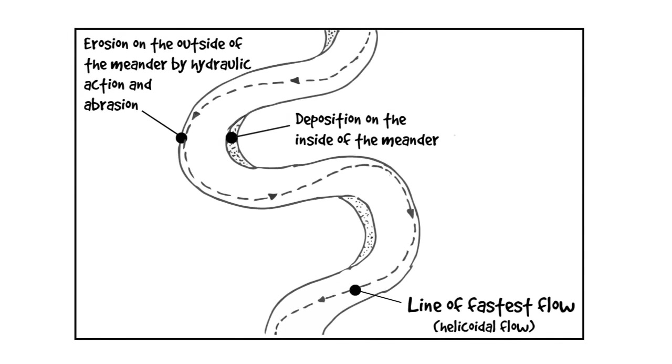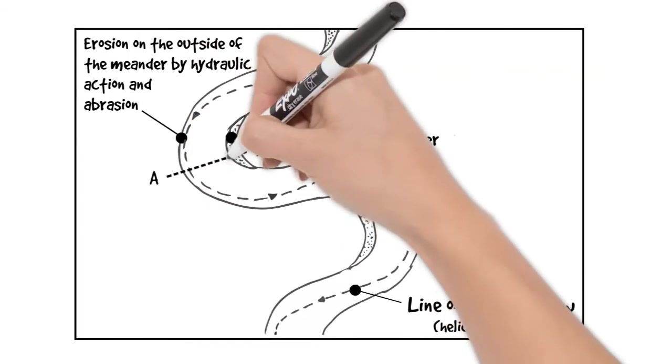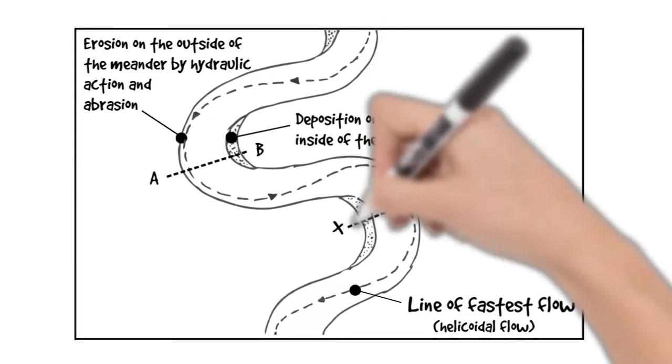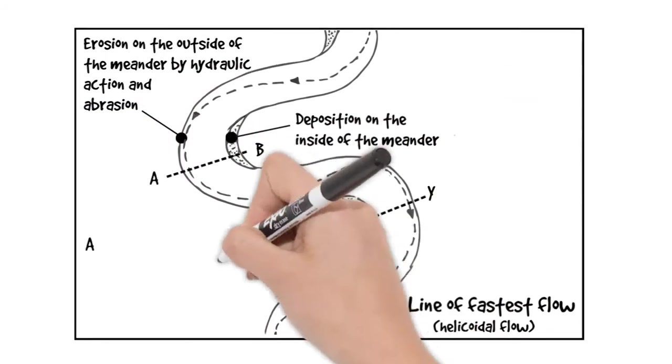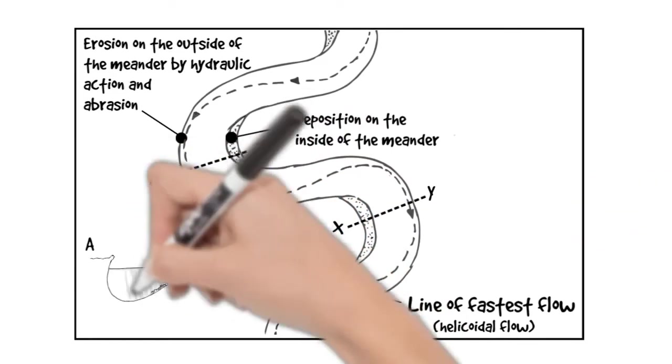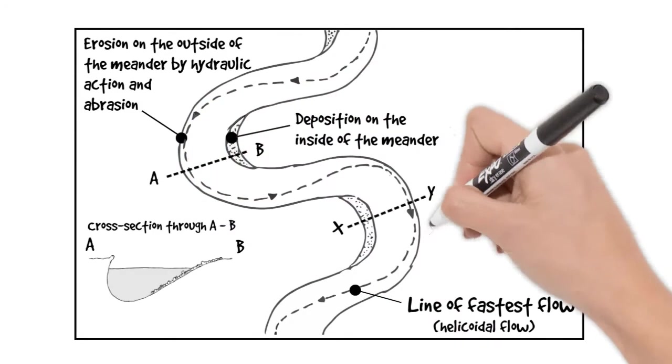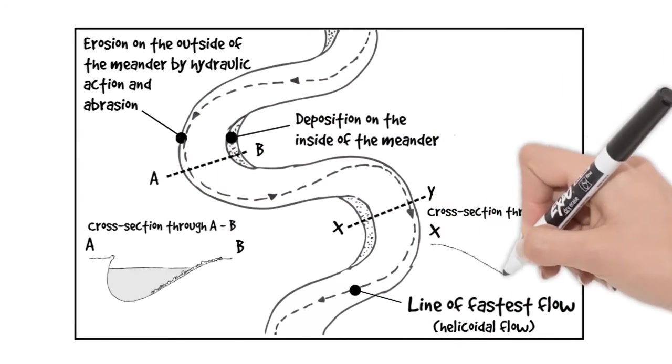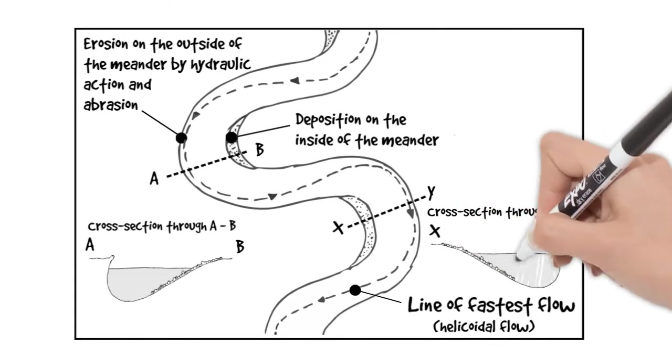Now we can join our two diagrams together. If we label AB across this meander and XY across the next meander downstream, we can draw cross section diagrams to show the shape of the channel. There we have AB with the outer bend on the left and then XY, our cross section which has the outer bend on the right. That's where the fastest flow is.